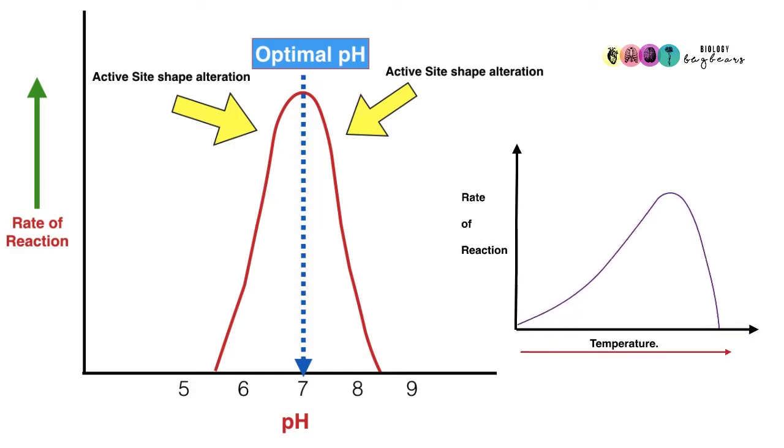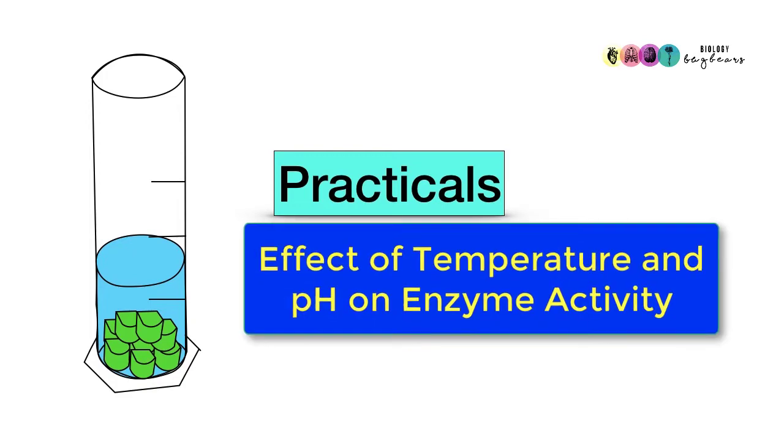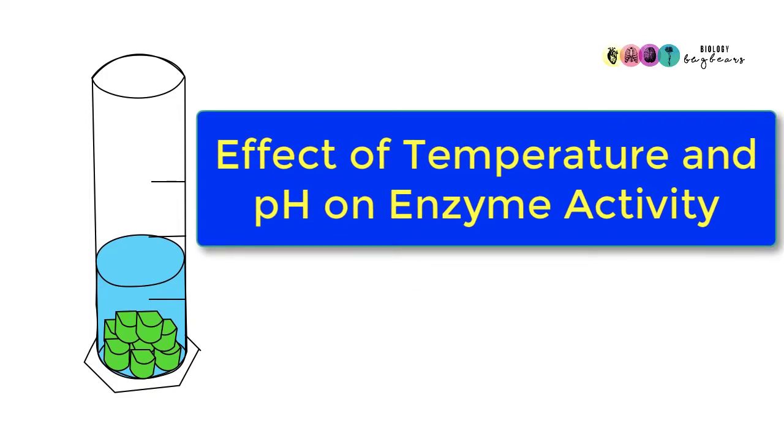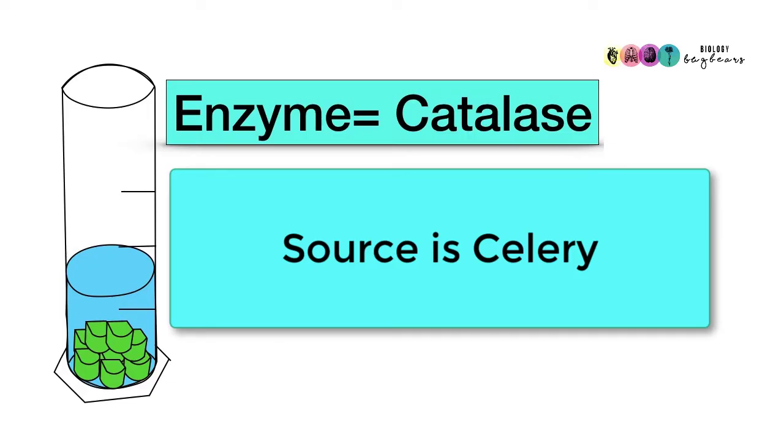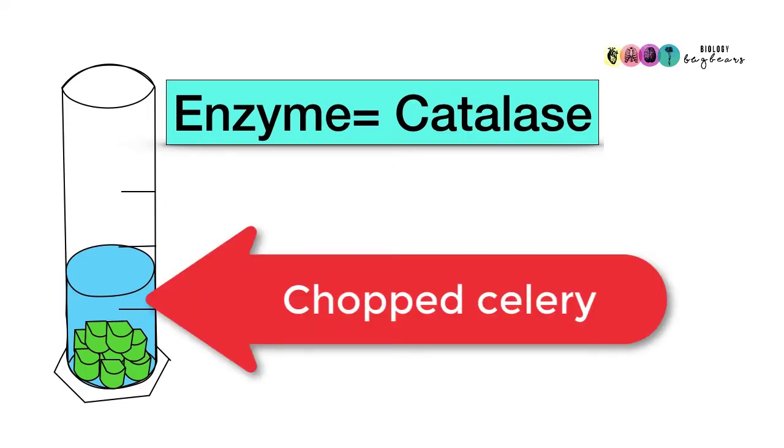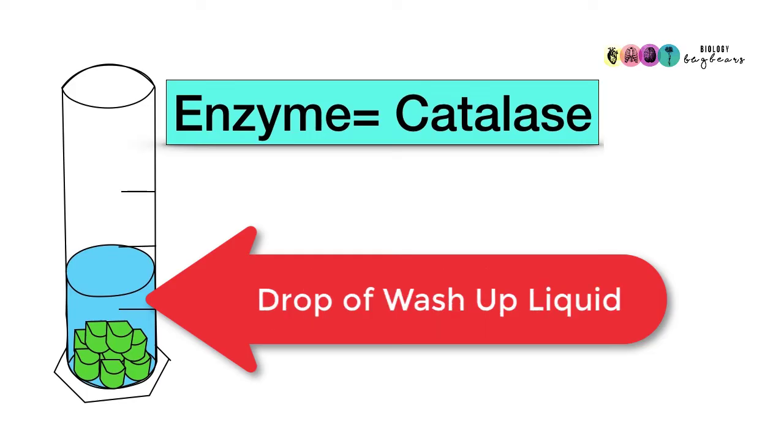Another area which always seems to cause problems is the enzyme practicals, particularly examining the effect of temperature and pH. We use practically the same setup for both of these practicals. The enzyme used in both the pH and temperature practical is catalase. The source of the catalase is celery. Into the graduated cylinder, the same amount of chopped celery would be placed, and into this would also be added some buffer solution, the same volume in each case, a drop of washing up liquid, and then the substrate, which was hydrogen peroxide.